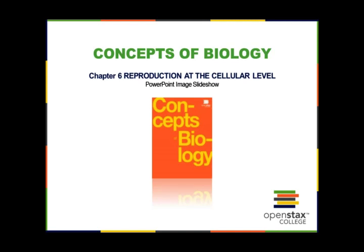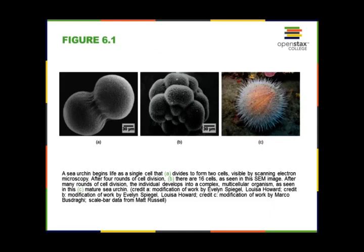Today we're going to cover chapter six, which looks at reproduction at the cellular level. Here are some examples of cells going through reproduction — on the left you have a sea urchin. It begins life as a single cell and then divides to form two cells, as seen on these scanning electron microscope images. After four rounds of division you end up with 16 cells. After many cell division rounds the individual develops into a complex multicellular organism — the sea urchin on the right. This process is called mitosis.